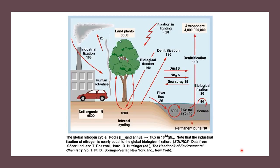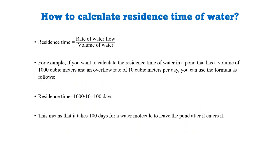The residence time of nitrogen in the atmosphere is around 1 million years — it takes about 1 million years for a nitrogen molecule to leave and re-enter the atmosphere. Nitrogen is recycled through processes like nitrogen fixation, nitrification, and denitrification, as well as human activities like fertilizer application, industrial processes, and combustion. Nitrogen is important for biosynthesis of amino acids and nucleic acids, but excess nitrogen in water can cause eutrophication, acid rain, and ozone depletion.